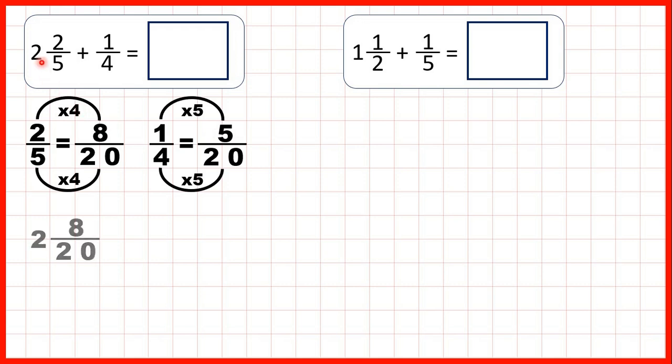So we can rewrite our question. Instead of 2 and 2 fifths we can write 2 and 8 twentieths because that's equivalent, and instead of adding 1 quarter we can add 5 twentieths. So now we have 2 wholes, the denominator of our fraction stayed the same, and 8 plus 5 is 13, so that's 2 and 13 twentieths as our answer.